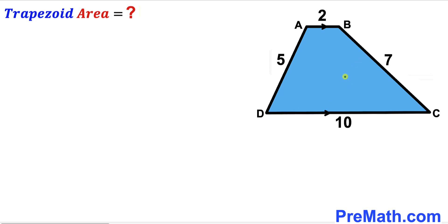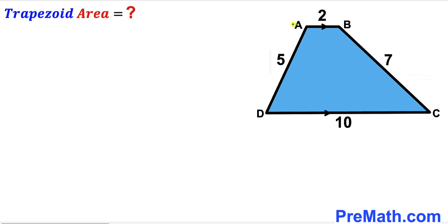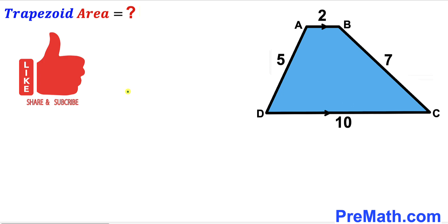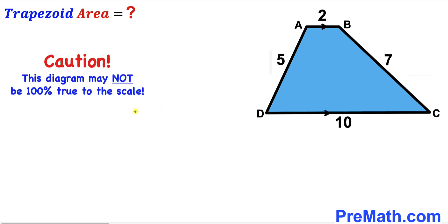Welcome to pre-math. In this video we have got this blue shaded trapezoid ABCD, such that its bases are 10 units and 2 units respectively, its side AD is 5 units, and its other side BC is 7 units. Our task is to calculate the area of this trapezoid ABCD. Please don't forget to give a thumbs up and subscribe, and keep in mind that this figure may not be 100% true to scale.